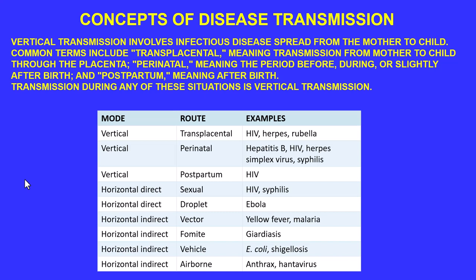For horizontal indirect transmission, a vector — such as a mosquito — can carry yellow fever or malaria. A fomite might be water that is non-living but contains a parasite like Giardia; consuming that water causes it to enter the body and creates severe gastrointestinal problems, as it is a protozoan.